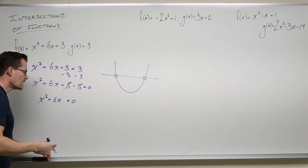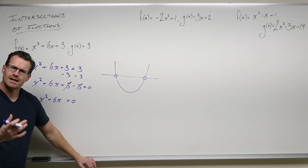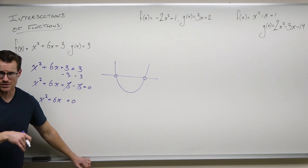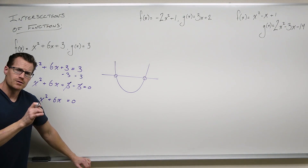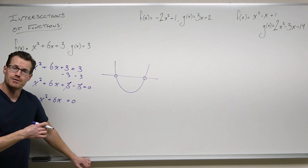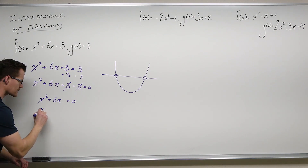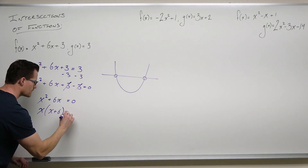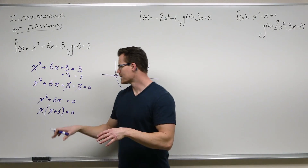Now, how we solve it? Number one, we'd always try the square root method, and it's not going to work because we can't isolate our power two without getting an x on the other side. But we can do the next step: factor. Remember that we can always factor a GCF if one exists. Here it does — we'd factor an x.